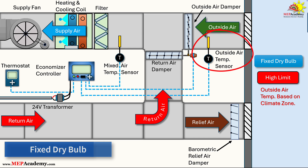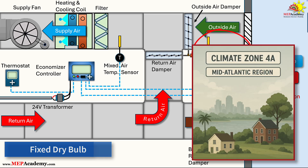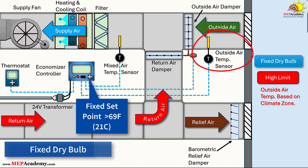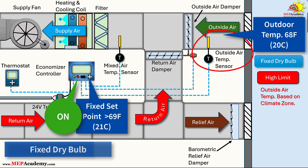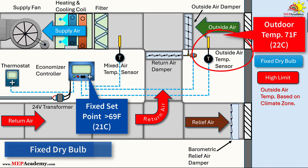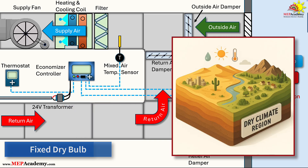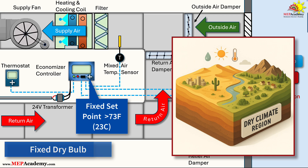Consider a commercial building in a moderate climate, such as Climate Zone 4A, such as parts of the U.S. Mid-Atlantic region. The fixed dry bulb set point might be set at 69°F (21°C). On a day when the outdoor temperature is 68°F, the economizer enables, allowing outdoor air to mix with return air to cool the space. However, if the temperature rises to 71°F (22°C), the economizer shuts off to prevent warmer air from entering, shifting the load to the mechanical cooling system. If you're in a drier area, like Zones 1B through 5B, the fixed dry bulb might be set at 73°F (23°C).